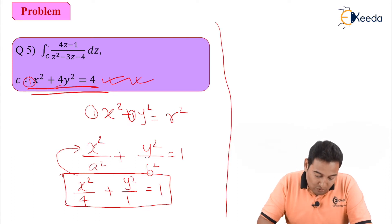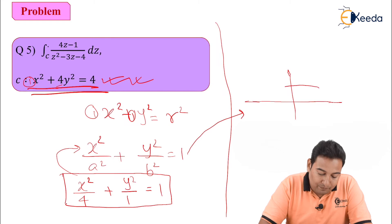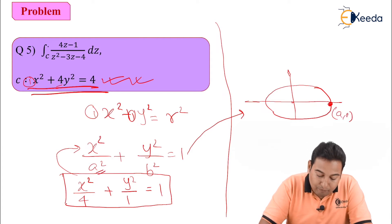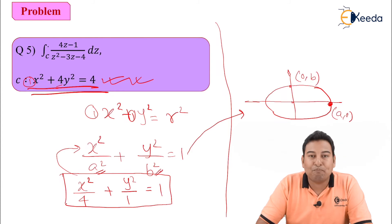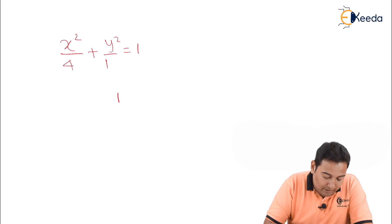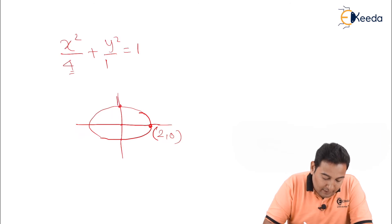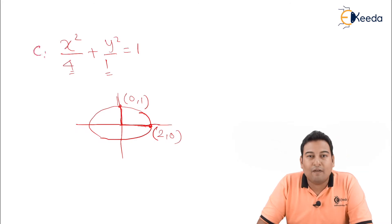Now let me show how the ellipse looks. On the x-axis, the distance is a (so the point is a, 0), and on the y-axis, the distance is b (giving point 0, b). In our equation x²/4 + y²/1 = 1, the x-intercept is √4 = 2, giving (2, 0), and the y-intercept is √1 = 1, giving (0, 1). So this is the given region for this problem.